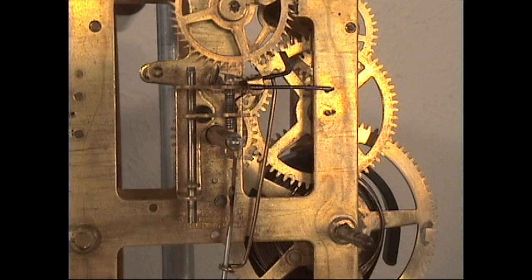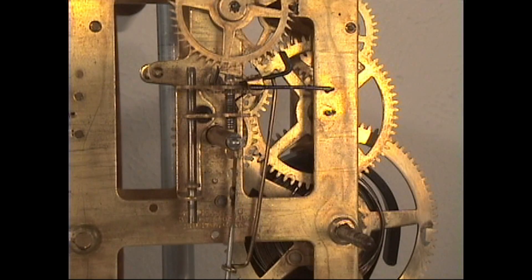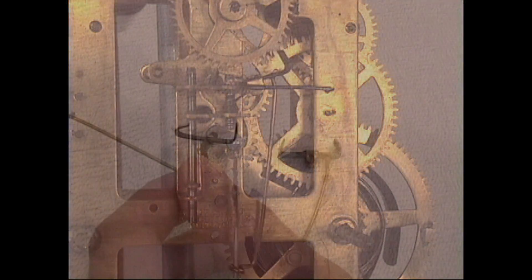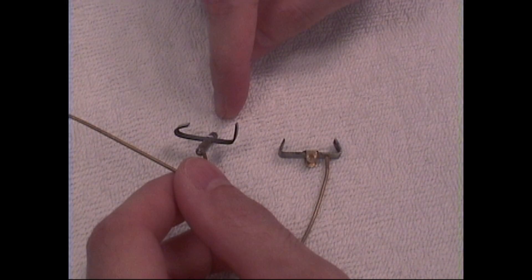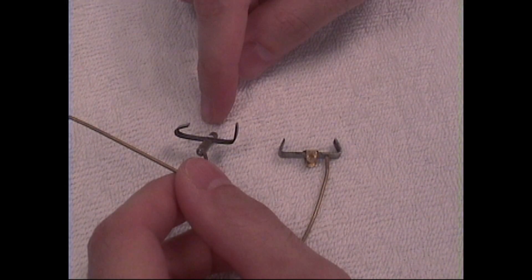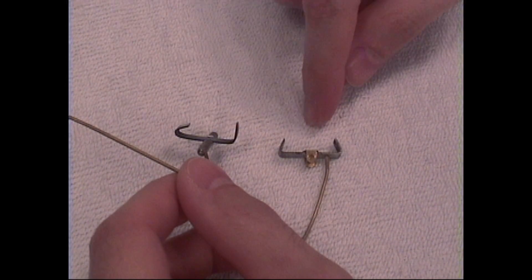Now let's look at the differences in the verges. Here are the two verges. This one here, this one is the recoil verge or recoil escapement. This one is our half deadbeat.